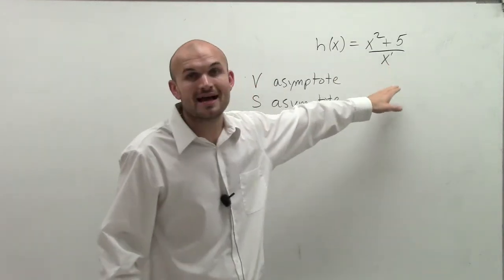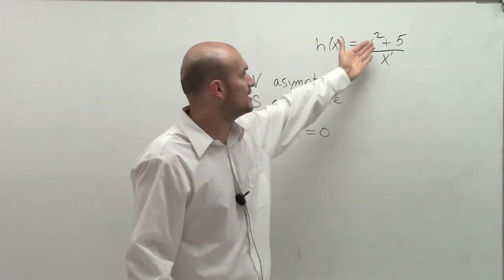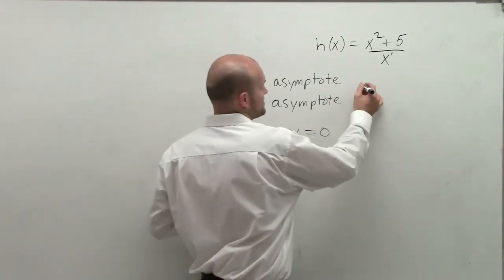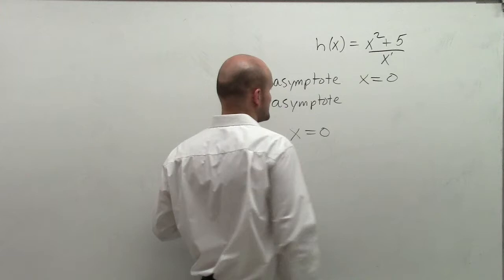That means whenever my value of x is equal to 0, the denominator is equal to 0, creating a vertical asymptote. So therefore, my vertical asymptote is going to be x equals 0.